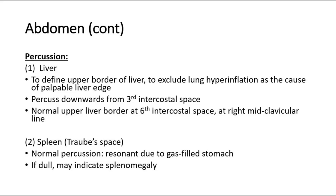Percussion for the liver: the indication is to define the upper border of the liver to exclude lung hyperinflation as the cause of a palpable liver edge below the right costal margin. Percuss downwards from the third intercostal space. The normal upper liver border is at the sixth intercostal space at the right mid-clavicular line. If more than 2 cm of liver is palpable below the right costal margin, we want to rule out lung hyperinflation — such as seen in bronchiolitis — and percussion can confirm whether the upper border is lower than the sixth intercostal space.